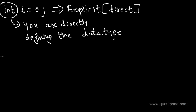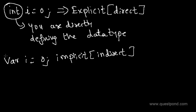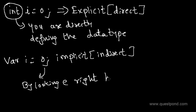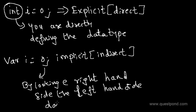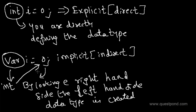Now let's try to understand what happens when we start using the var keyword. When you define a data type with a var keyword, you are actually defining the data type indirectly or implicitly. In other words, when you use the var keyword, the compiler looks at the data which is present on the right-hand side and creates an appropriate data type during the compilation process.